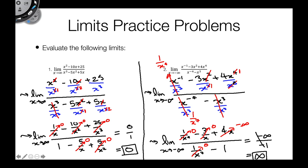So this limit goes to positive infinity. Now if someone were to ask you if this limit exists — it does not exist. Infinity is a concept, not a number, so it doesn't really go to anything finite. But specifically, this function tends towards positive infinity, so you can be specific and identify that even though the limit does not exist.